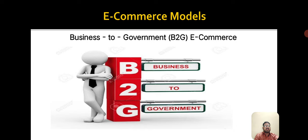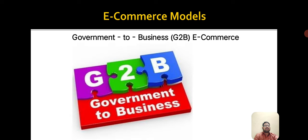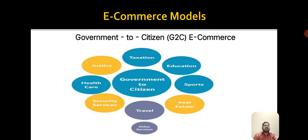The exchange of information, services and products between business organizations and government agencies online is business to government e-commerce. Government to business e-commerce, also known as e-government, involves the exchange of information, services and products between government agencies and business organizations. Government sites enable this exchange, including information and advice for businesses on international trading, sources of funding and support facilities.